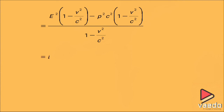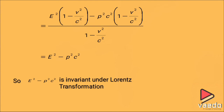Reducing further, we obtain E² − p²c². Therefore, we can easily state that E² − p²c² is invariant under Lorentz transformation.